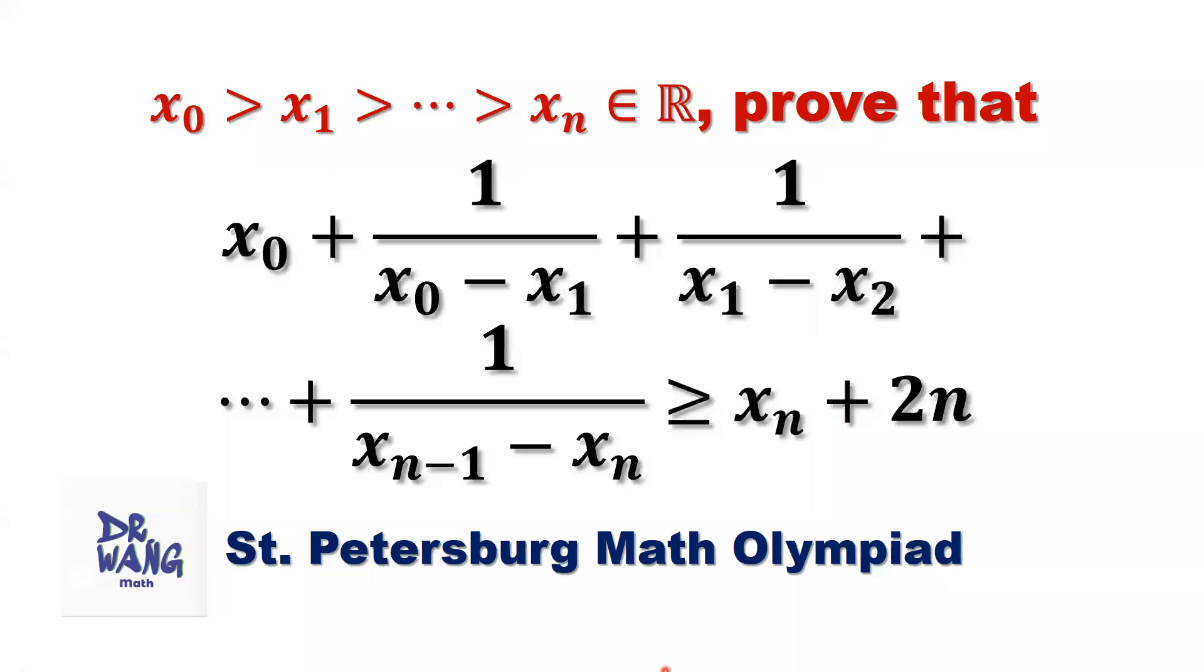Hello everyone, I'm Dr. N. Here is the question. If x0 is bigger than x1, x1 is bigger than x2, until xn minus 1 is bigger than xn.